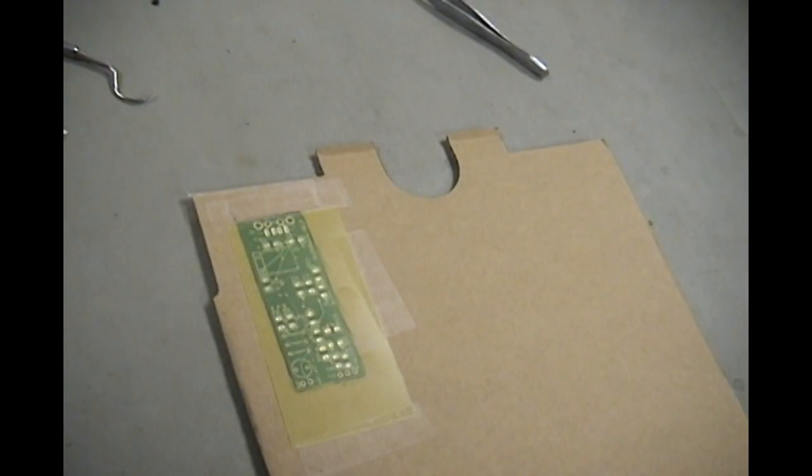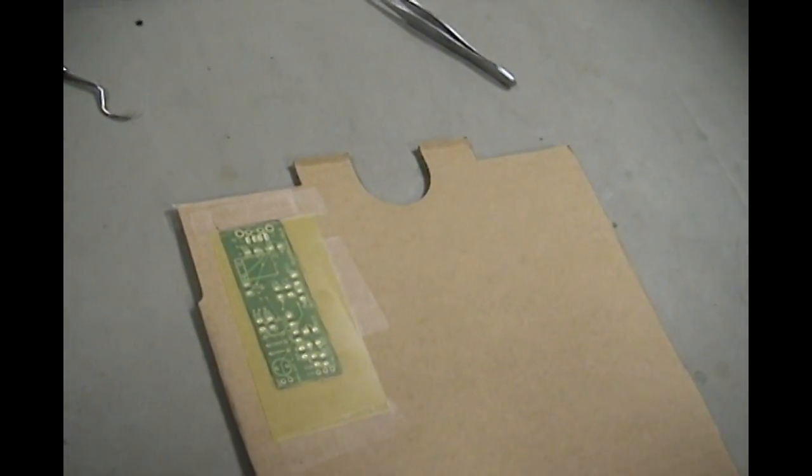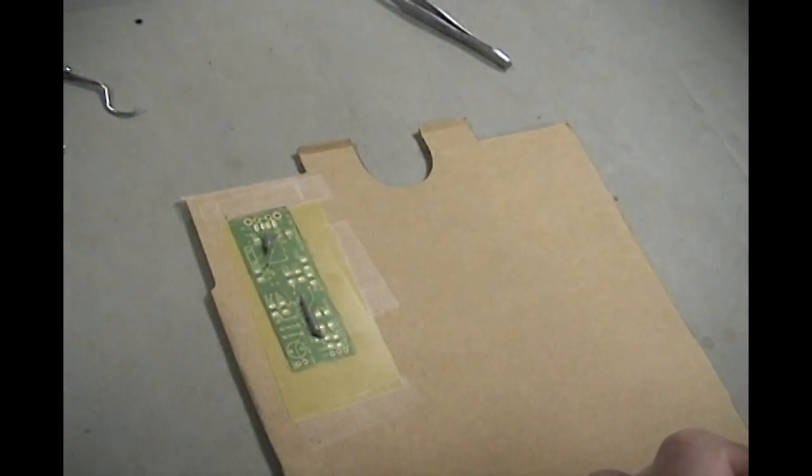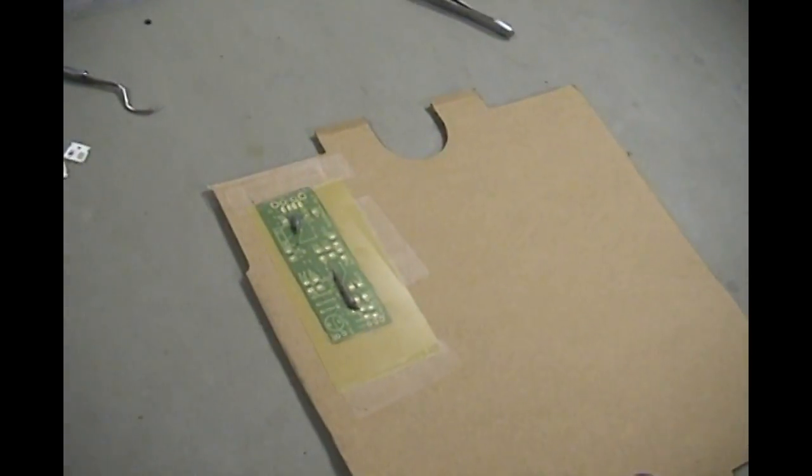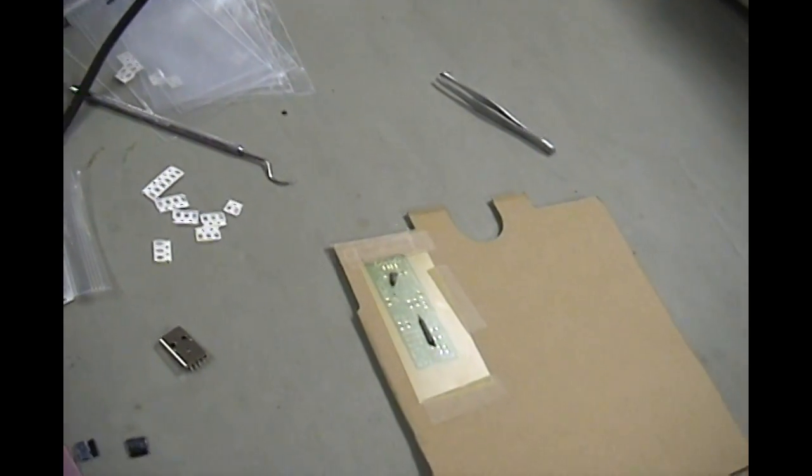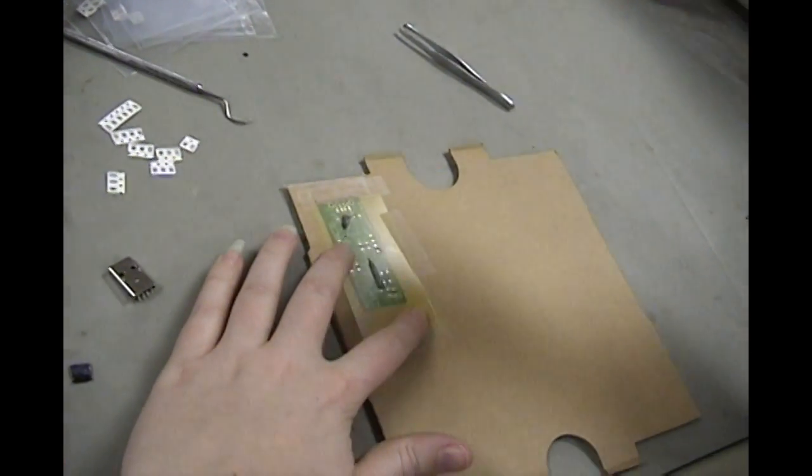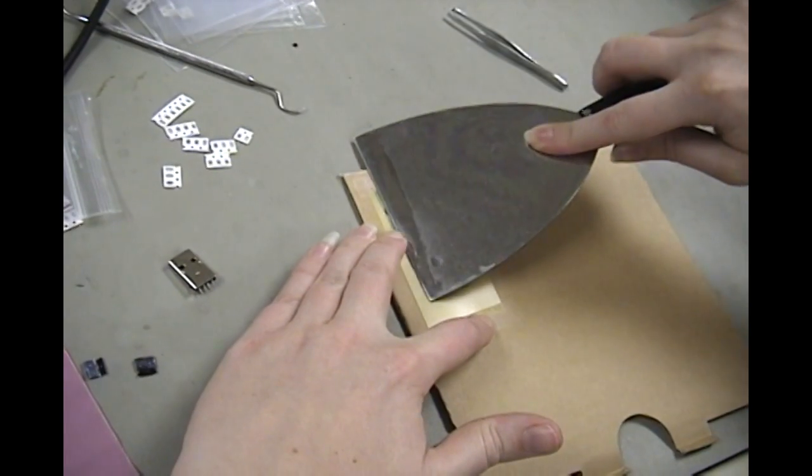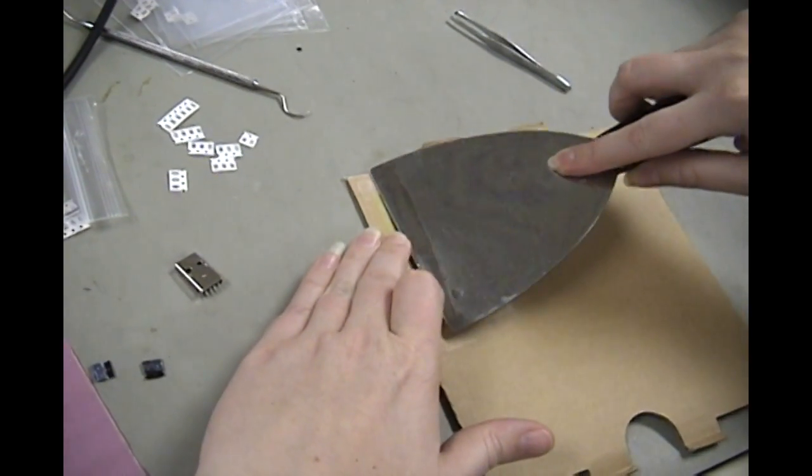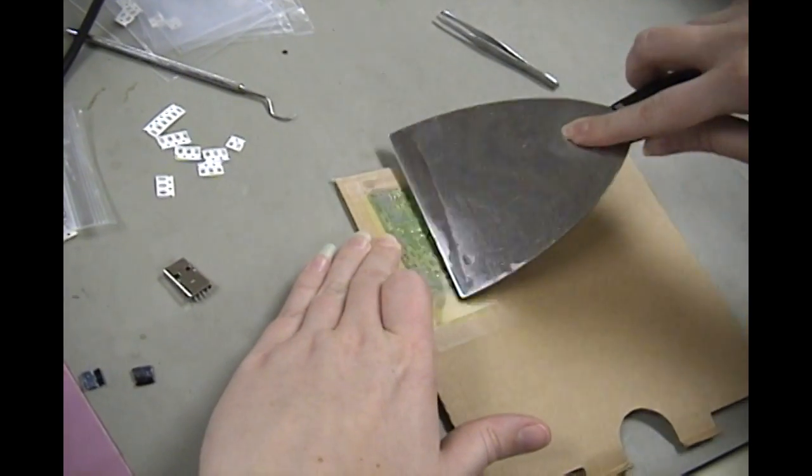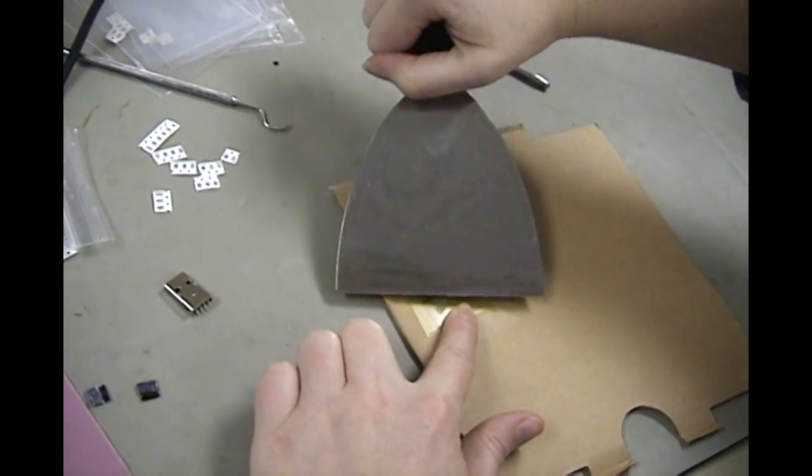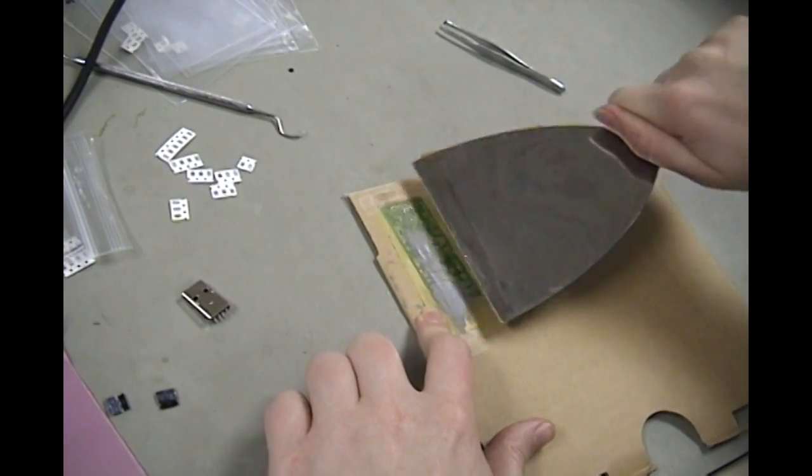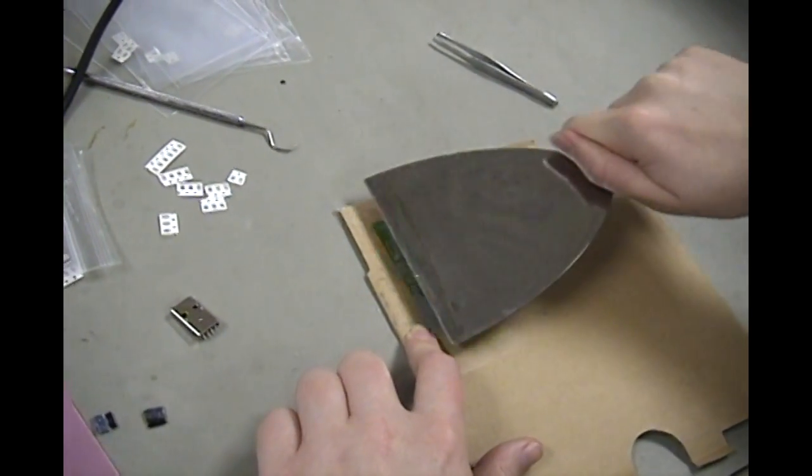And now for more solder paste. Now you want the stencil to be as flush with the board as possible while you're applying it because that will help keep the paste from going out to the sides or any of those other bad things. By using a sort of paint scraper like this it's easy to apply and then pull it back off again. It's useful, it's helpful, it's nice.